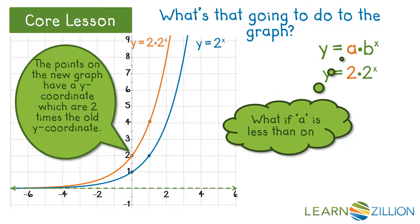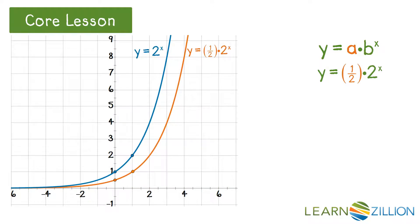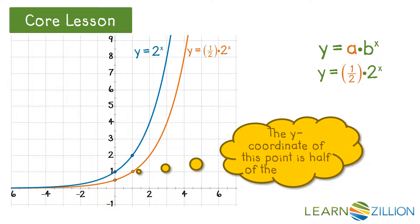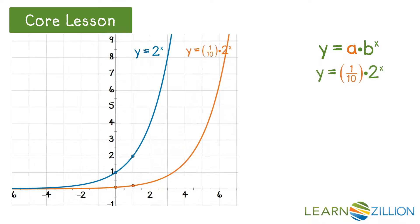But what if a is less than 1? Watch the graph as I change a. If a is 1 half, all of the y-coordinates of the parent function become half the original height. Now 1 fourth and 1 tenth as much as the parent function.